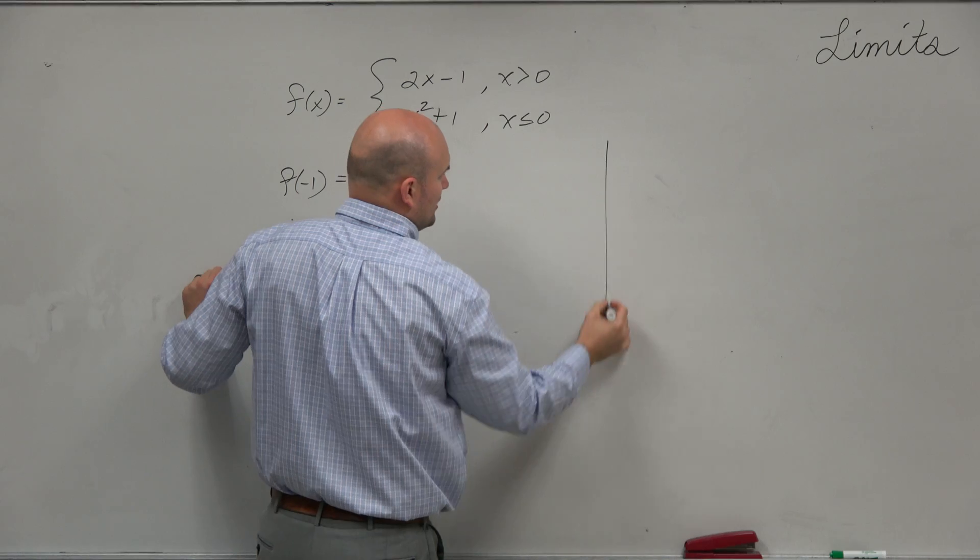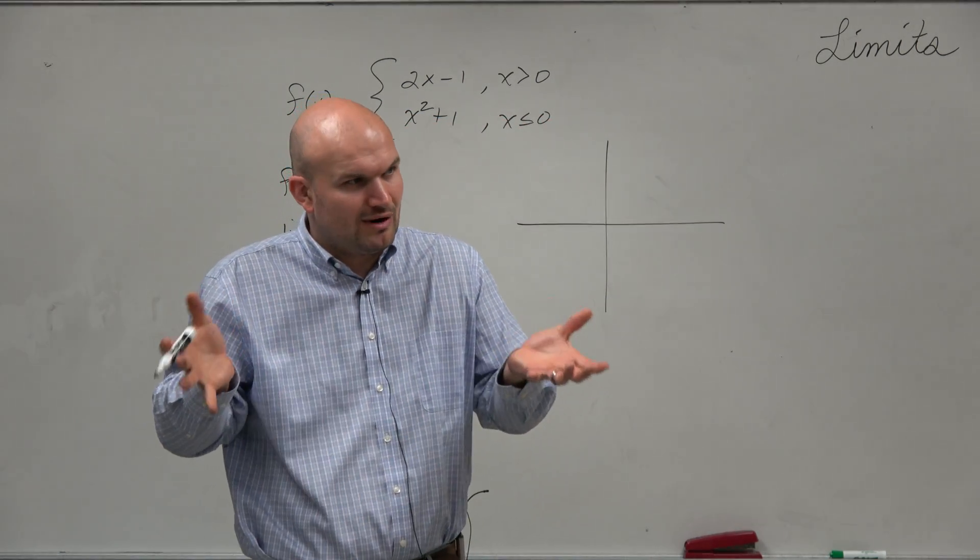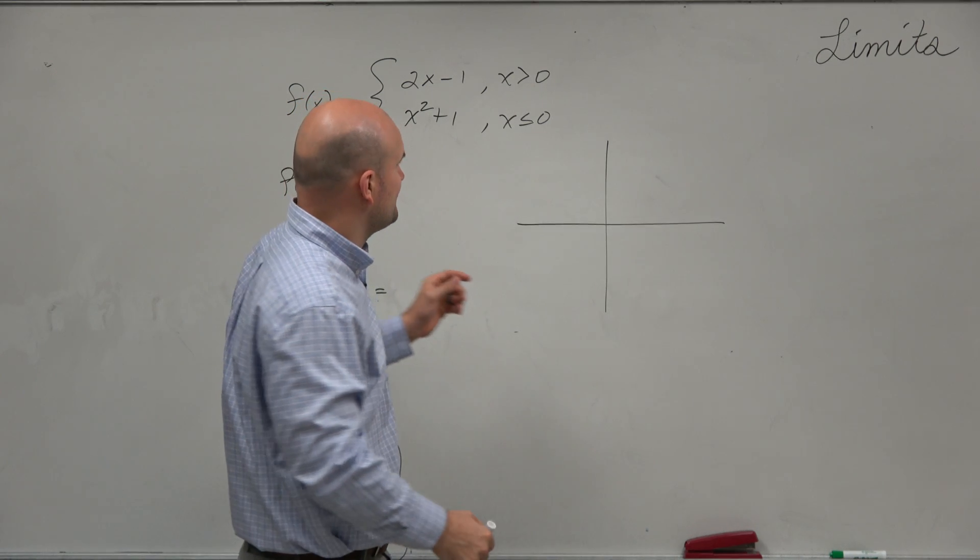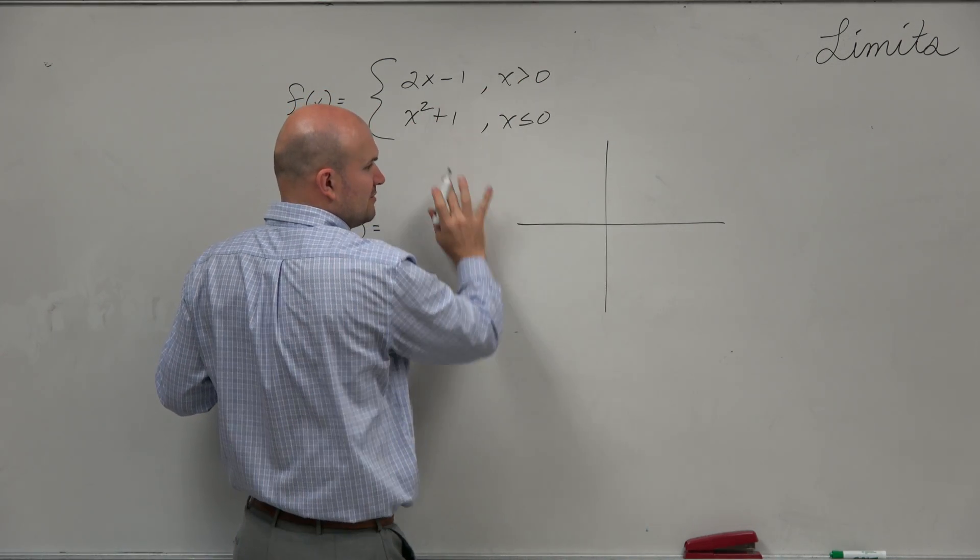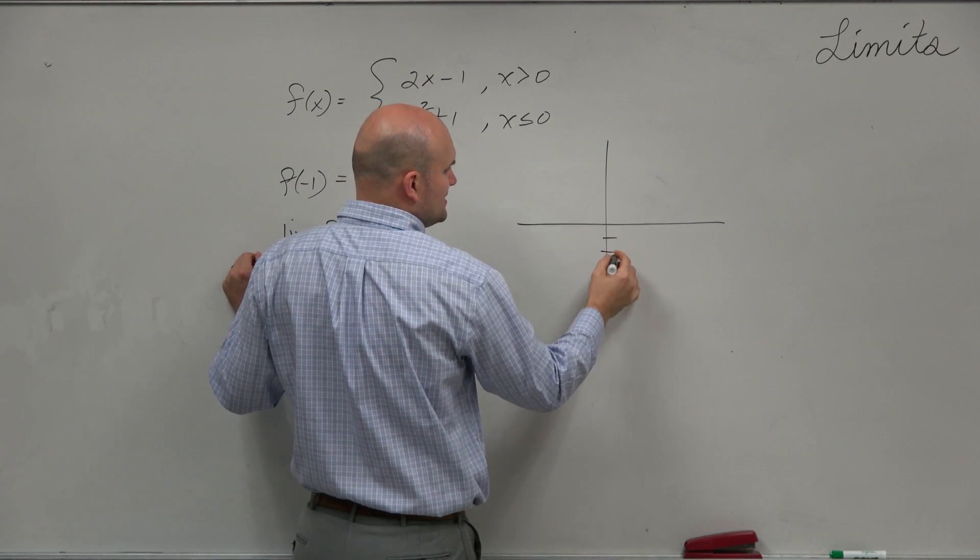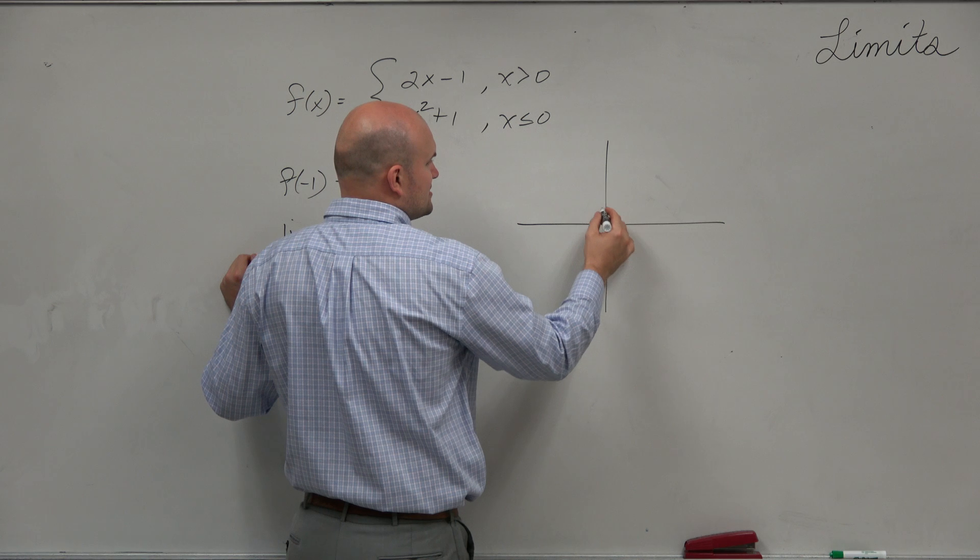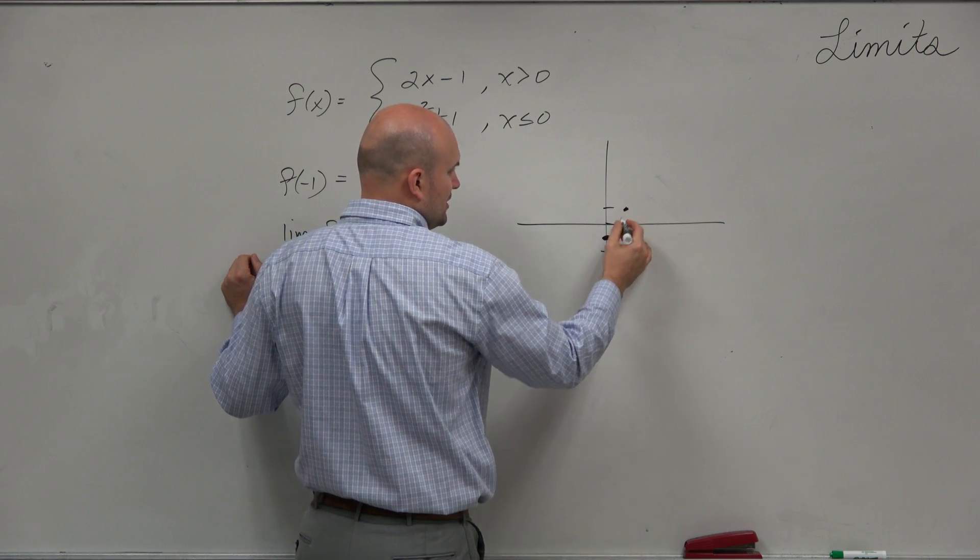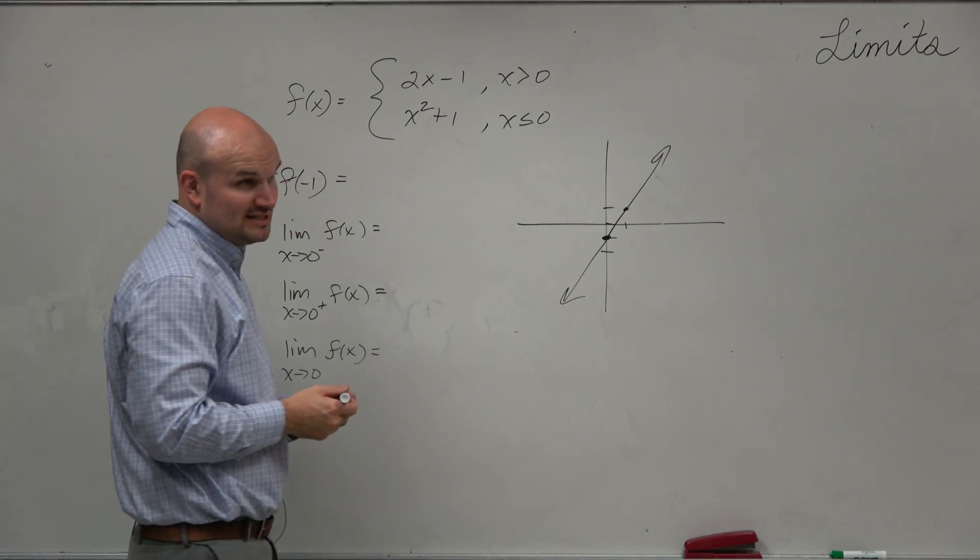Now, we can graph these, and I'll solve this problem with graphing. But you don't necessarily have to know what the graph looks like. But it is helpful. Let's graph 2x - 1. Now, forget about the restriction for a second. 2x - 1 has a y-intercept of -1, and then a slope of up 2 over 1, something we learned in algebra 1. And then it looks something like this. Now, the domain is restricted.